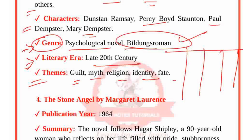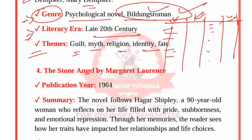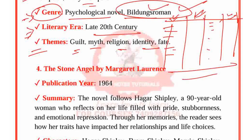I have already told you that you can create a list like this — write the publication date, the name of characters and the genre. I will give you a PDF later, but first make a little effort to write it yourself. The more you write, the more you will learn.